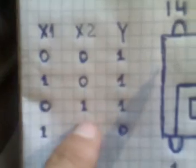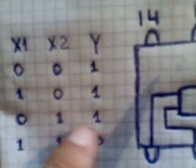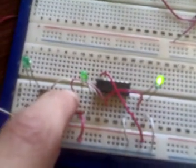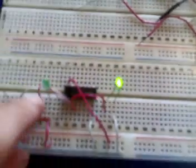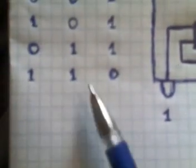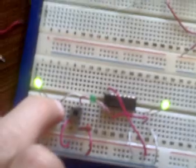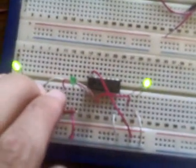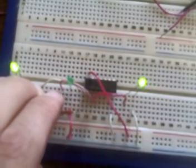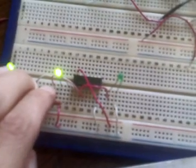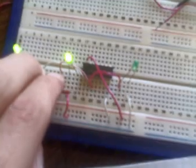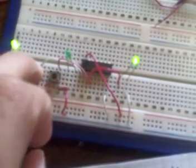When we give the first input low voltage and the second input high voltage, we have high voltage in the output. When we give the first switch low and the second switch high voltage, we still have high voltage in the output. Finally, when we give high voltage to both inputs, we have low voltage in the output. When we give both inputs high voltage, we can see that the output changes to low voltage, and when we remove our hand from the second switch, the output returns to high voltage. This is our NAND element.